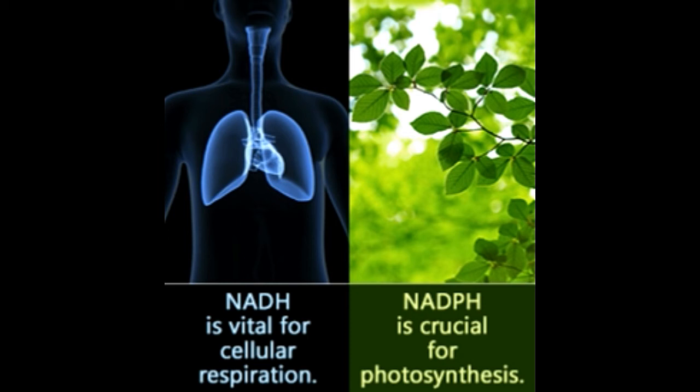NAD acts as an oxidizing agent in catabolic reactions, meaning it oxidizes and loses an electron. The role of NAD is critical in oxidative metabolism, a process in which cells are broken down to generate energy. For instance, breakdown of energy-yielding nutrients such as glucose requires NAD.